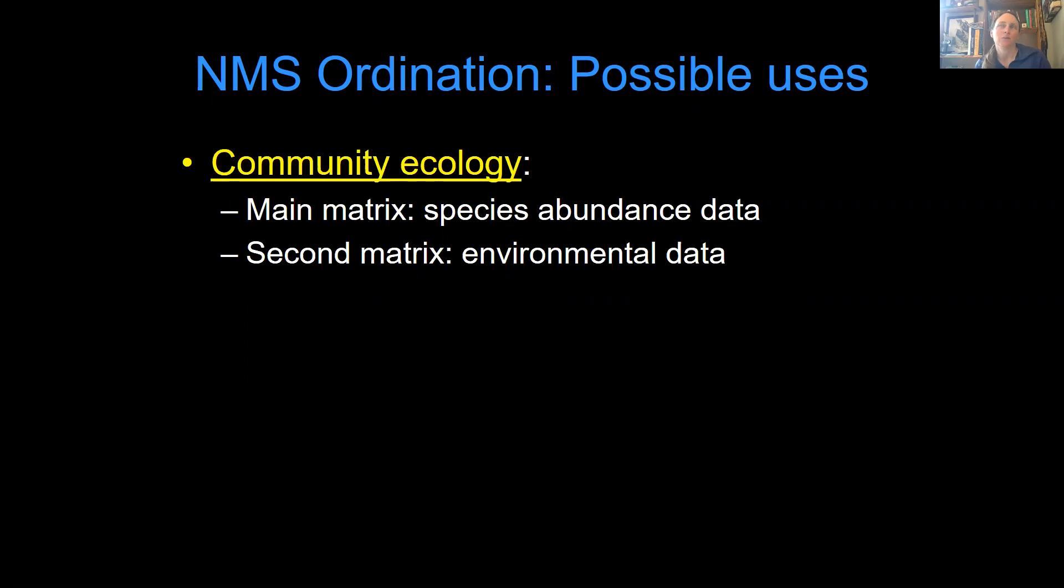So maybe you're comparing natural versus man-made wetlands. That would be a categorical variable in your environmental data. Maybe you also have the depth of the water, the temperature of the water, the size of the wetland, the distance between the wetland and some natural area. So all of those kinds of variables would be in your environmental data set.